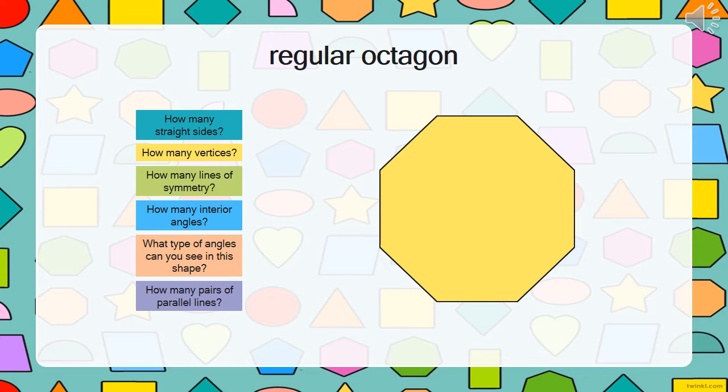Next we have a regular octagon. It has eight straight sides, eight vertices, eight lines of symmetry, eight interior angles, eight obtuse angles, and four pairs of parallel lines.